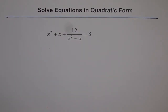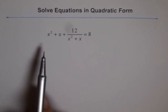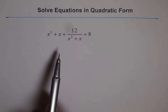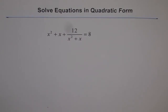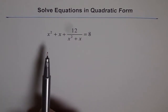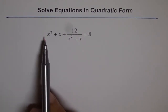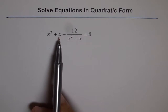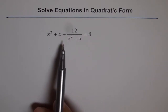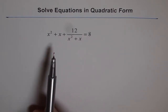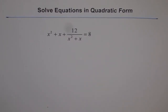We are going to solve equations in quadratic form. Here we have an equation that looks like a quadratic but is not quite so. It says x squared plus x plus 12 over x squared plus x equals 8. This suggests that we can make a substitution, letting x squared plus x be some number, to get a simpler equation.